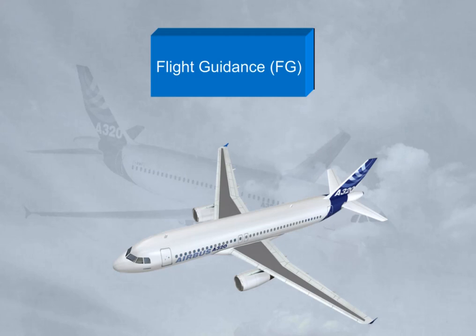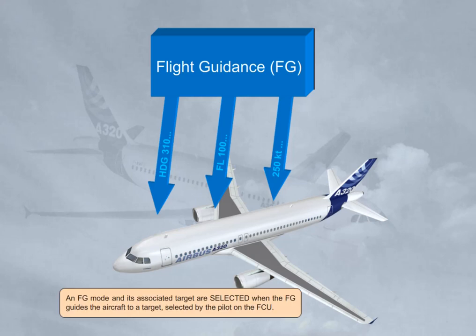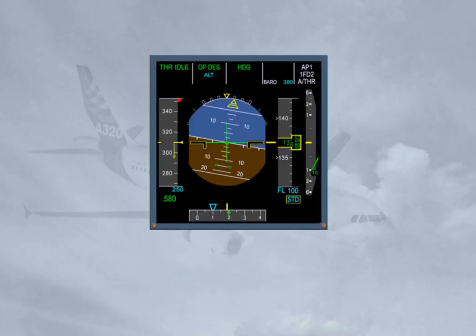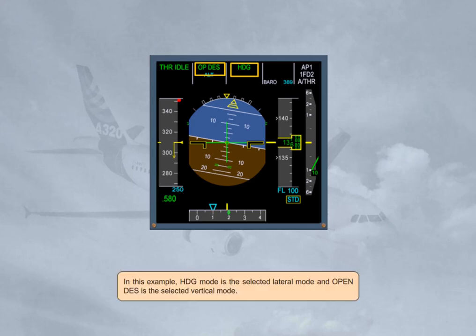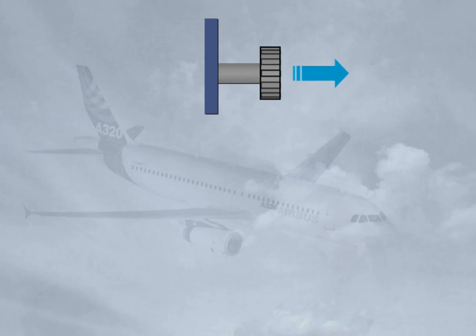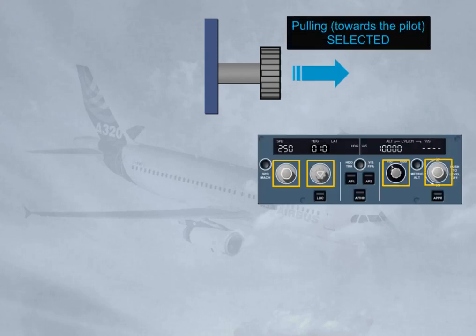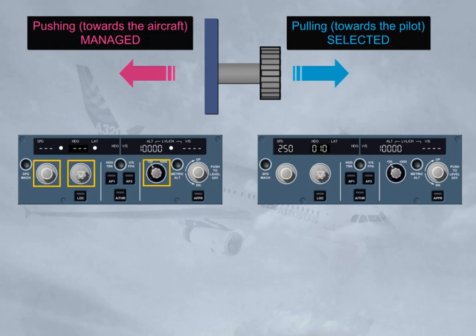An FG mode and its associated target are selected when the FG guides the aircraft to a target selected by the pilot on the FCU. In this example, Heading mode is the selected lateral mode and Open Descent is the selected vertical mode. The pilot can engage selected modes by pulling the corresponding selection knobs on the FCU, and engage managed modes by pushing the appropriate selection knobs on the FCU.